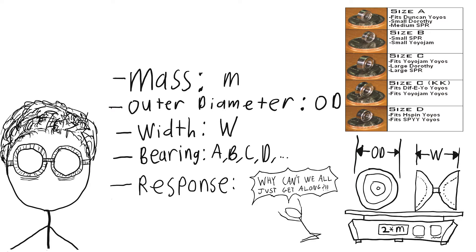Specify the type of bearing and the type of response you want the yoyo to have, all the while keeping in mind what category of play you want your yoyo to be used for. Don't put flowable and a C-sized bearing in a looper.